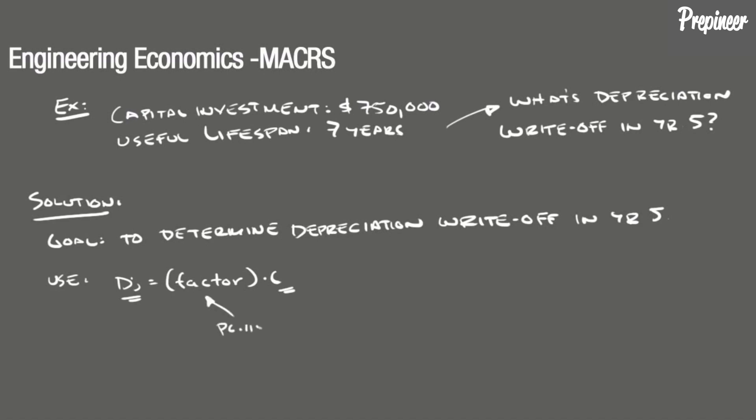Now remember, the factor can be found by noting the useful lifespan and referencing the modified ACRS table found on page 115 of the NCEES Supplied Reference Handbook. In this problem, we are given a cost C of $750,000, a lifespan of seven years, and we want to find the depreciation charge for year five.